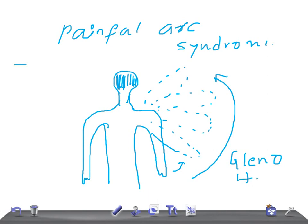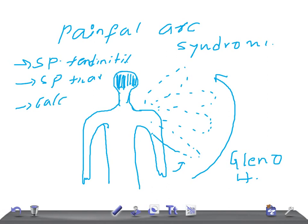What are the causes? The different causes include: supraspinatus tendonitis, minor tears of the supraspinatus tendon, calcification of the supraspinatus tendon seen on X-ray, sub-acromial bursitis, or fracture of the greater tuberosity. These are the causes that result in painful arc syndrome.